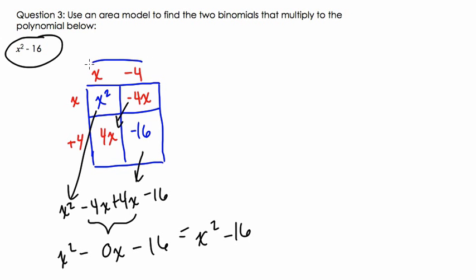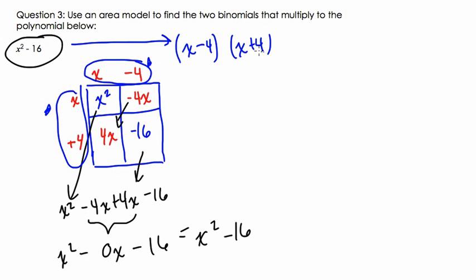We're trying to factor it, which means we're trying to find the two binomials here that multiply to give us the area that we need. So, this ends up equaling x minus 4, this binomial right here, times x plus 4. That's what factoring is doing. Thanks.